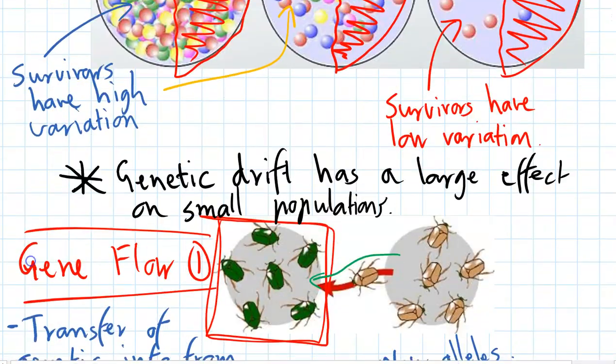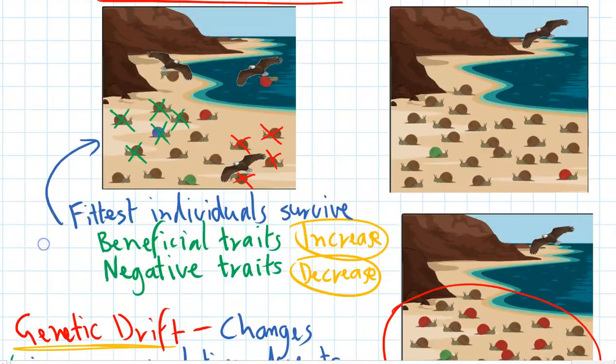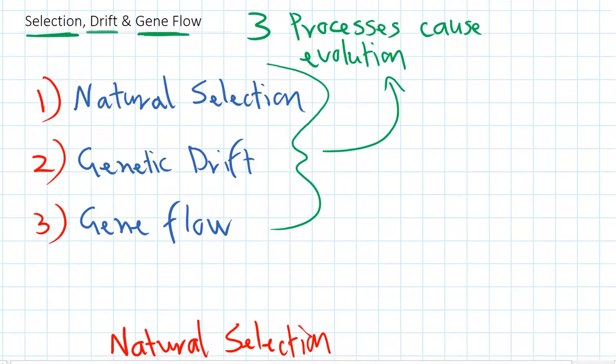So those are the three different types of mechanisms that evolution can happen by: natural selection, genetic drift, and gene flow.